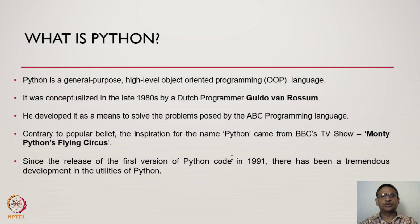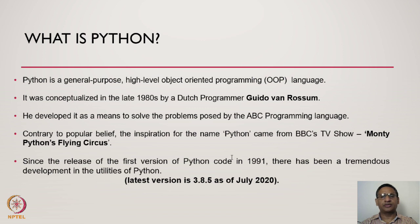So it has nothing to do with the snake Python. Since the release of the first version of Python code in 1991, there has been a tremendous development in the utilities of Python. The current version of Python is 3.8.5 as of July 2020.